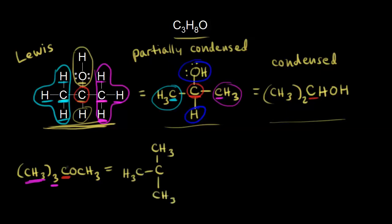The carbon in red is also bonded to an oxygen, so we draw in the oxygen next. Notice the carbon in red now has an octet of electrons around it. The oxygen is bonded to another CH3 group, so we draw in that CH3. Since we're doing a partially condensed structure, we don't draw in those bonds. We put in the lone pairs of electrons on the oxygen to give it an octet, and now we have our partially condensed structure.